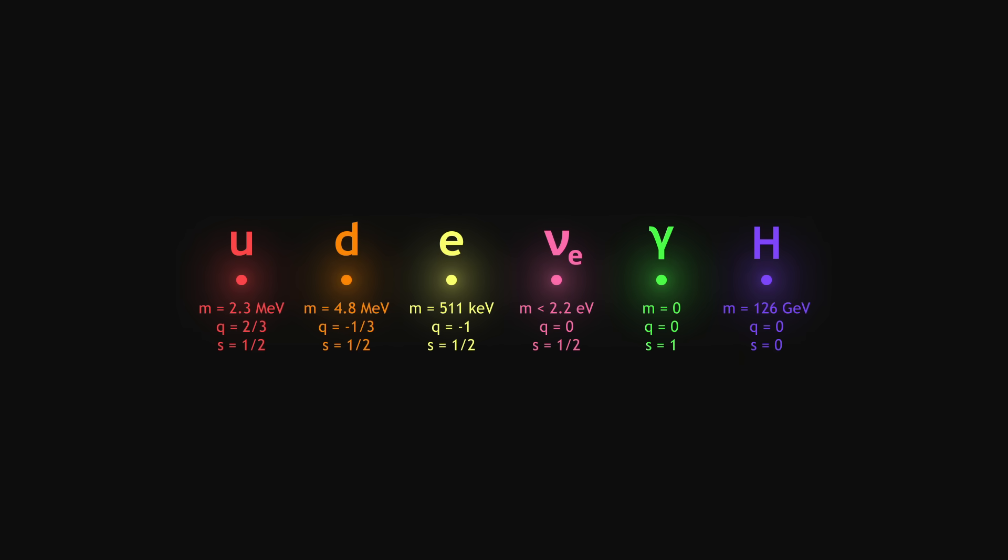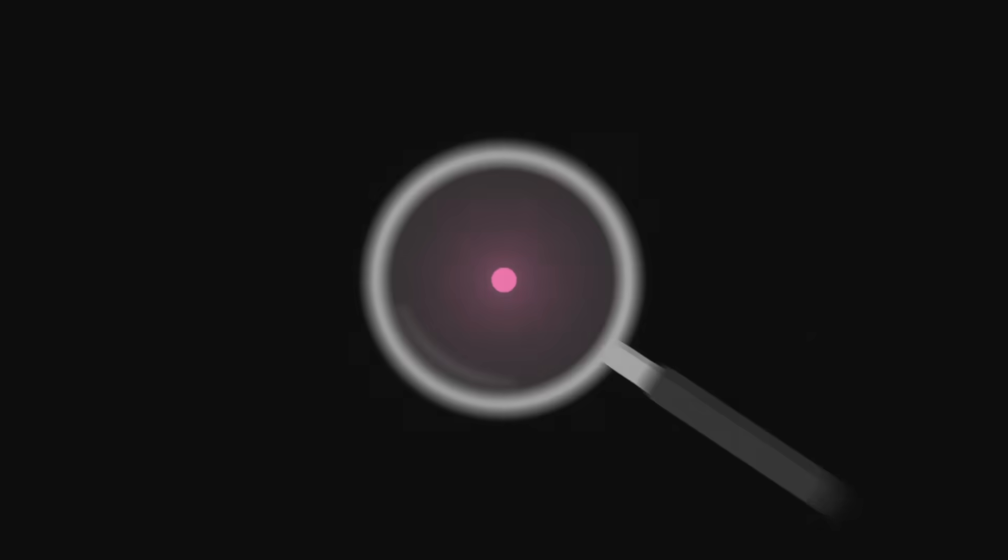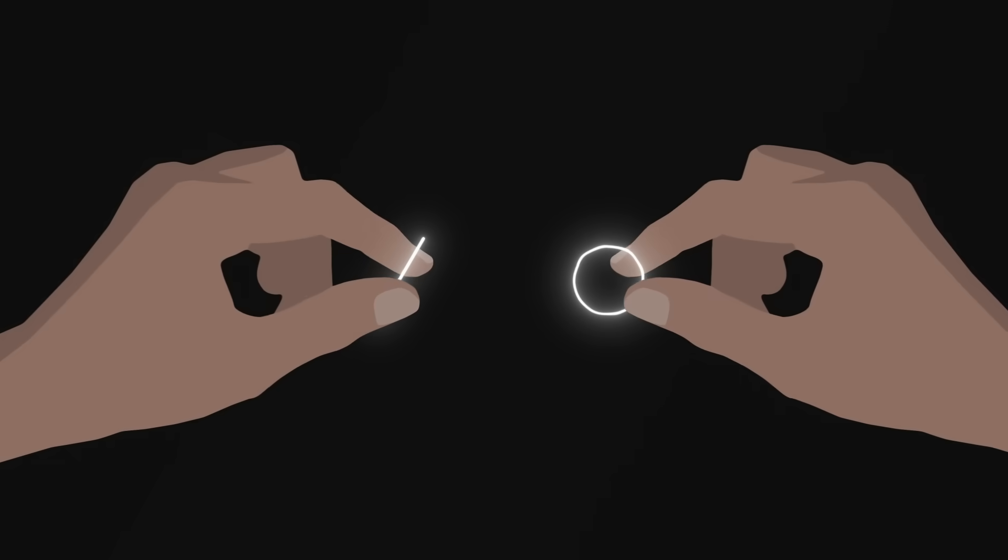In string theory, we will assume that this is only an approximation, and that if we zoom in on the particles, they are all made up of a small string, sometimes open and sometimes closed. These little strings have tension, like tiny rubber bands, and they can vibrate.